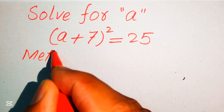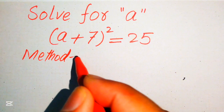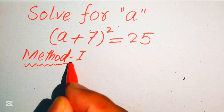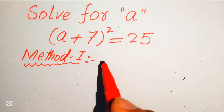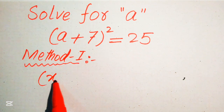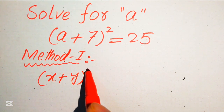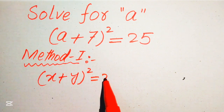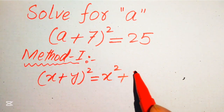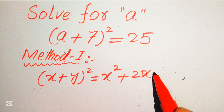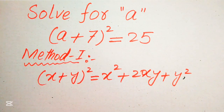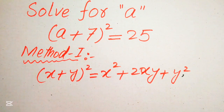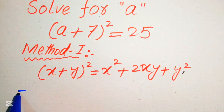First, we discuss Method 1. In this method, we solve the problem using the algebraic formula: (x + y)² = x² + 2xy + y².